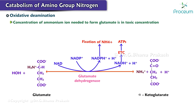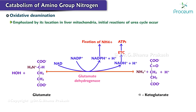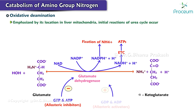The concentration of the ammonium ion needed to form glutamate is at toxic concentration; under normal conditions this is rarely attained except in the paravenous region of the liver. Thus, glutamate dehydrogenase's dominant role is in ammonia removal, emphasized by its location in liver mitochondria where the initial reactions of the urea cycle occur. The activity of glutamate dehydrogenase is allosterically regulated by GTP and ATP, which act as allosteric inhibitors, whereas GDP and ADP are allosteric activators.